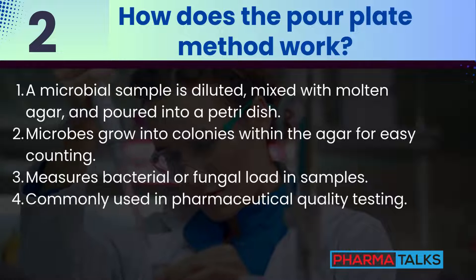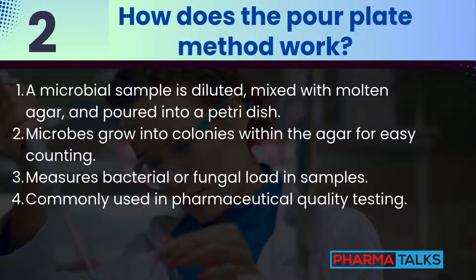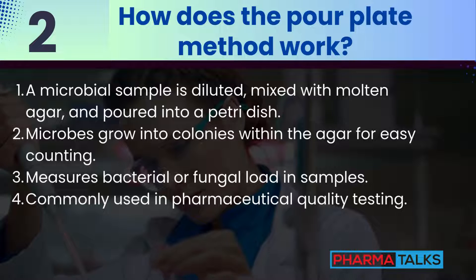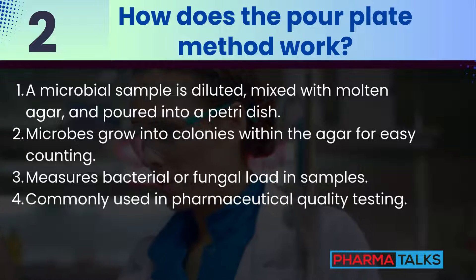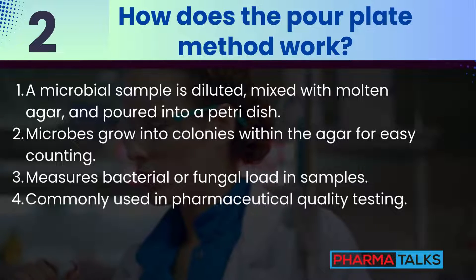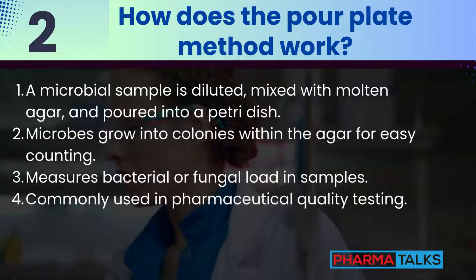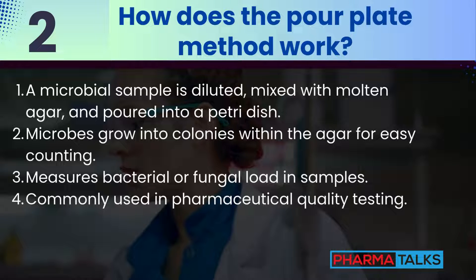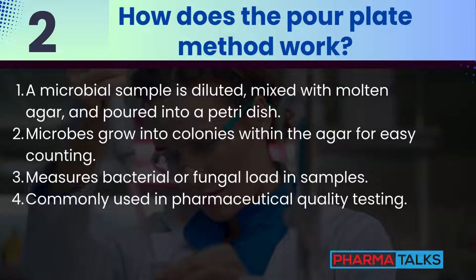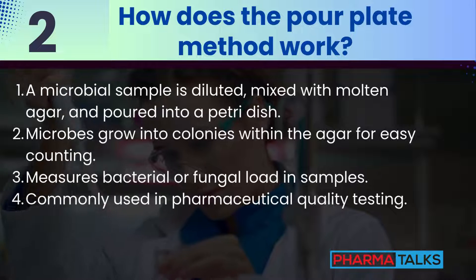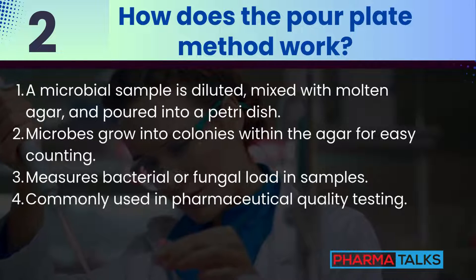How does the pour plate method work? In the pour plate method, a diluted microbial sample is mixed with molten agar and poured into a petri dish. Microorganisms grow into colonies within the agar, making it easy to count viable cells. This technique helps measure bacterial or fungal load in samples. It is commonly used in pharmaceutical quality testing.